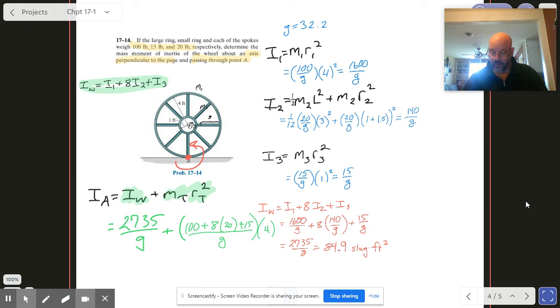Now once we run all of those numbers, what we get is 7135 over g. When we divide out g, then we get 221.6, and again that's fun units of slug feet squared.